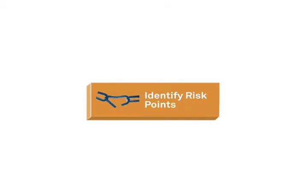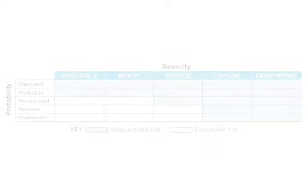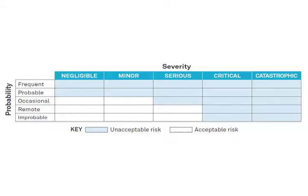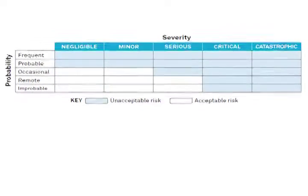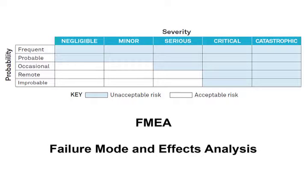The second step is to identify risk points. This means looking at each step in terms of the probability of mistakes and the severity of those mistakes. It is not necessary to conduct a complete failure mode and effects analysis for each step in the process.